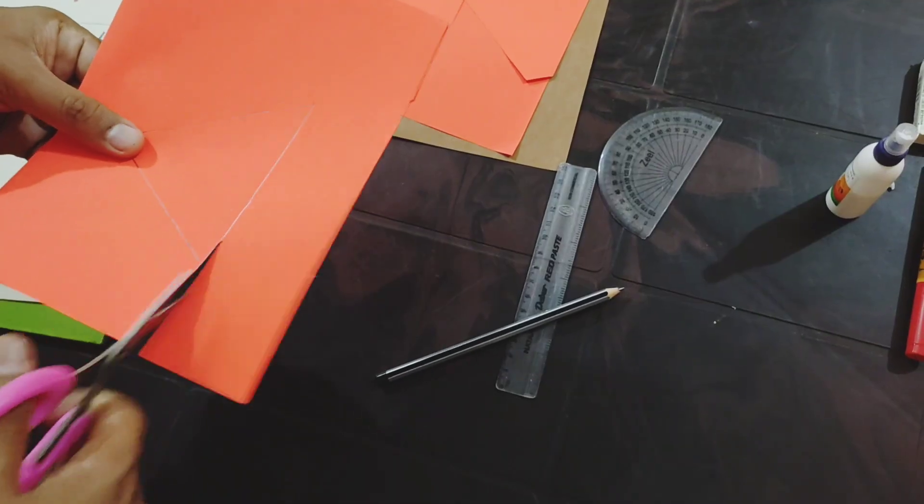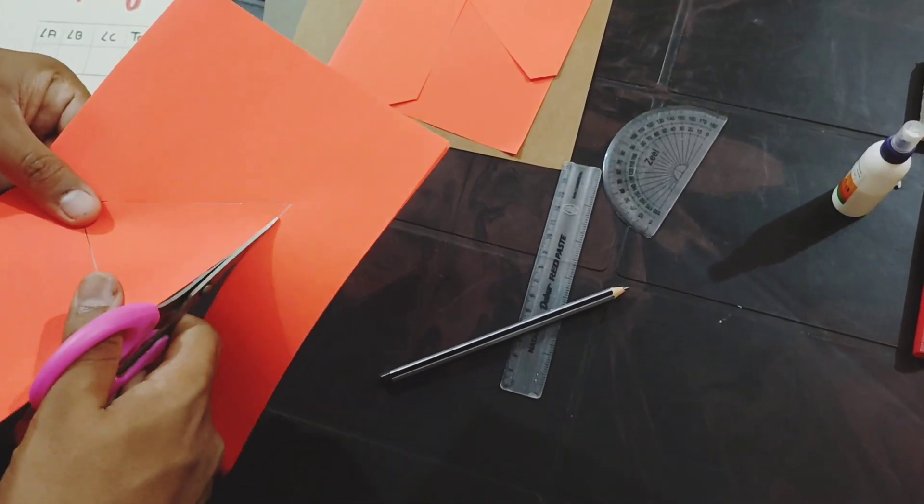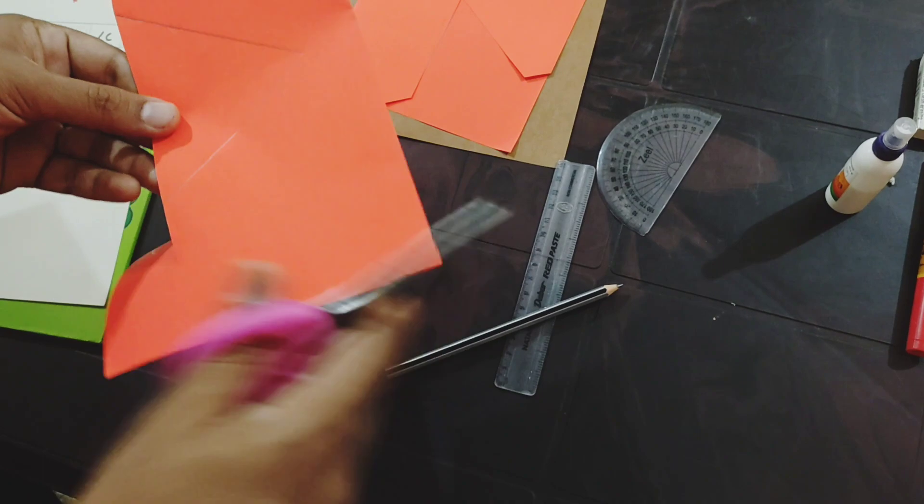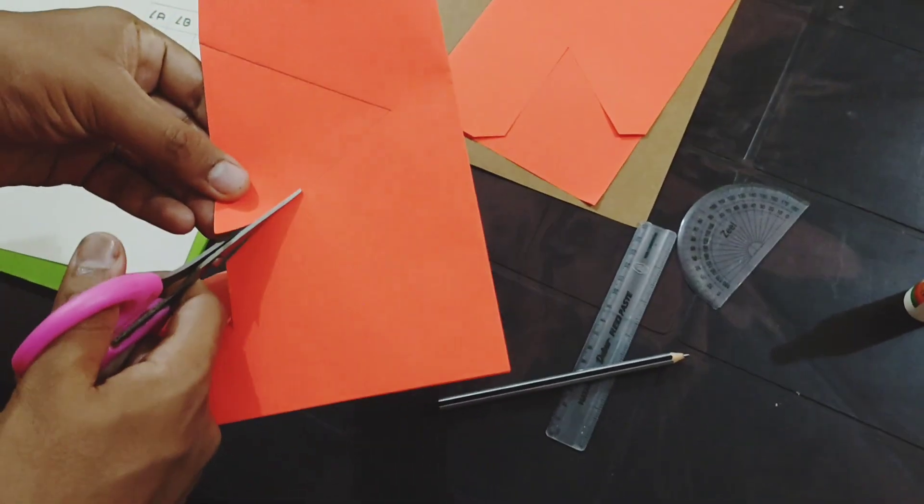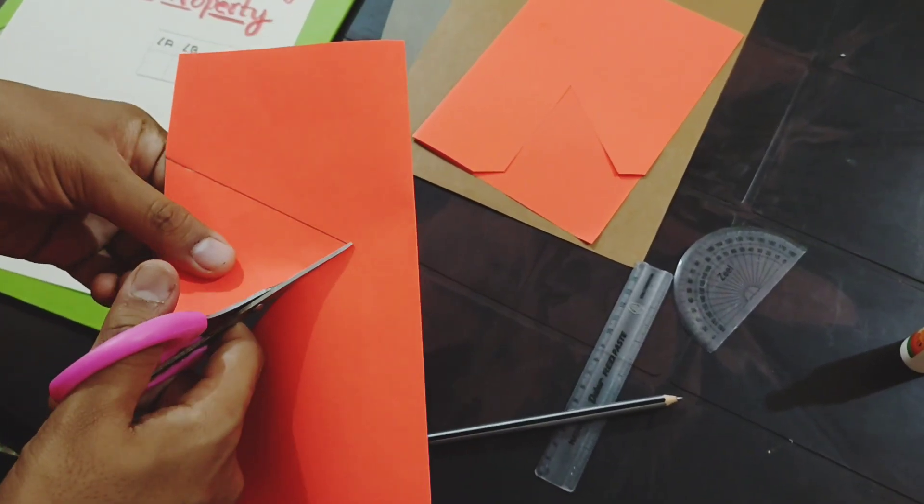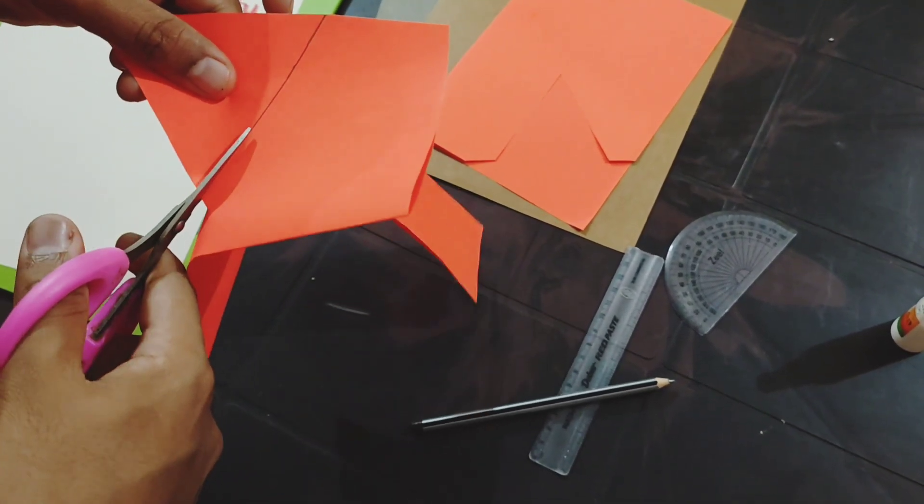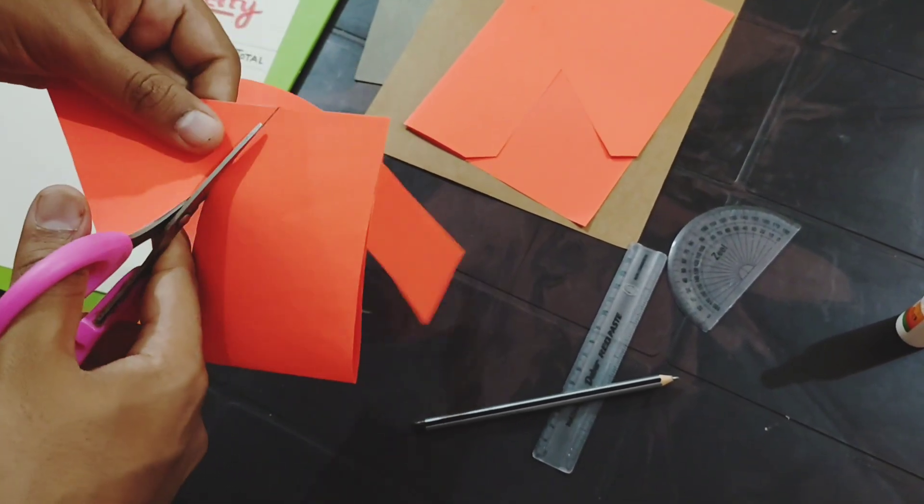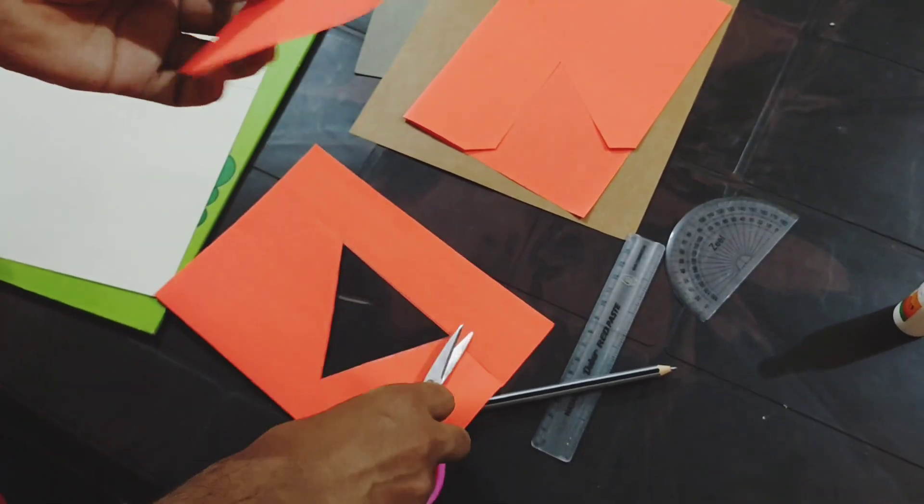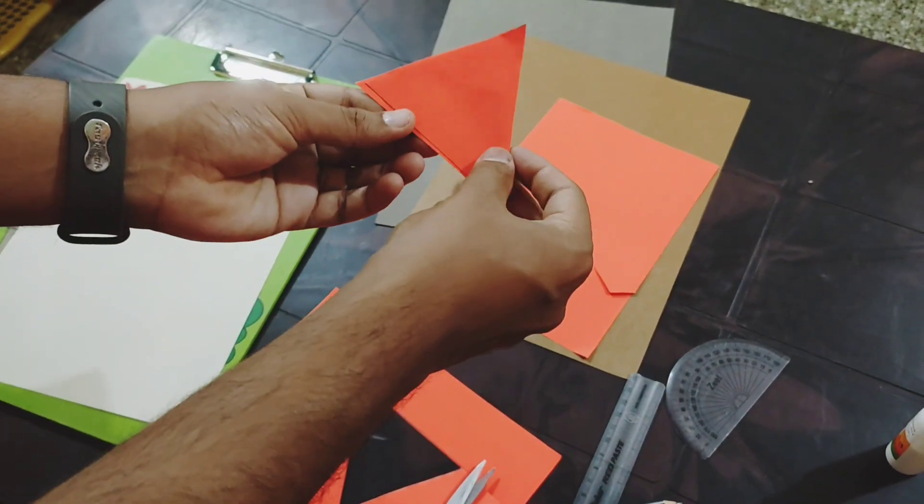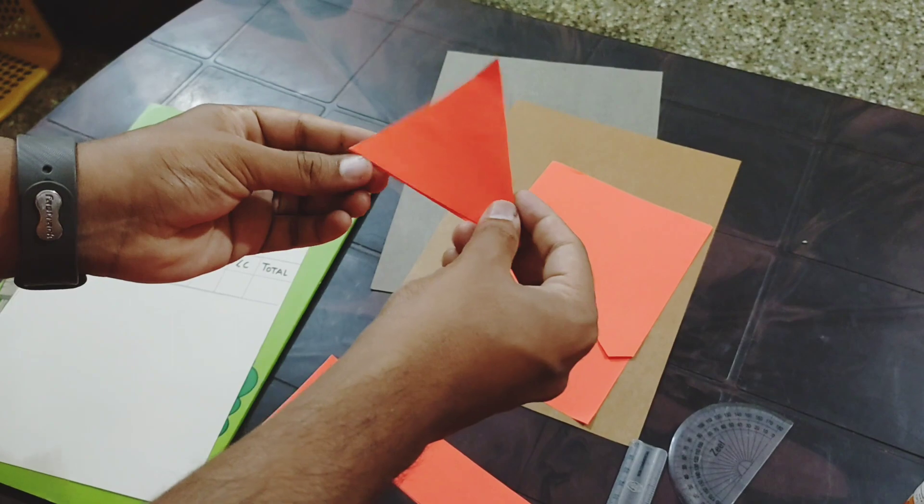Now I have drawn a triangle here in pencil. I'll quickly cut so that I will get two triangles. Cut it very neatly because it should look like a triangle. You can see I have got two triangles which are equal - congruent triangles which overlap one another.